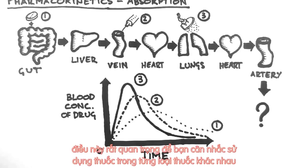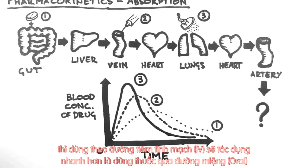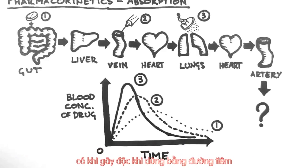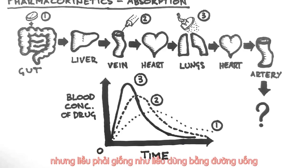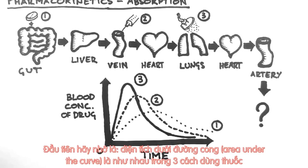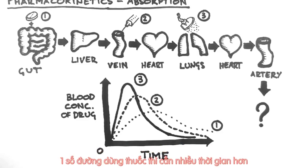You can see how different routes may cause a radically different C-max and T-max. This is important when considering applications for certain drugs. For instance, if you need pain relief quickly, an IV analgesic will get into the system much quicker than an oral one. Conversely, a drug which has side effects at high concentrations may be toxic if given intravenously, but the same dose might be safe if given orally. Also note that the area under the curve is the same for all these routes of administration, because the amount of exposure to the drug — that is, the dose — is the same. Some routes just spread the dose out over a greater length of time.